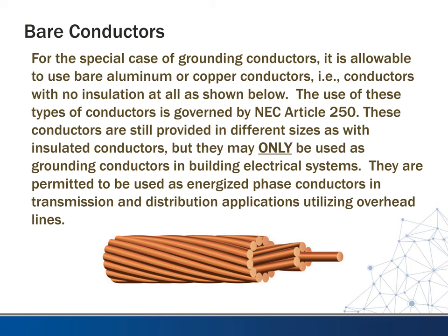The final category to touch on is bare conductors. For the special case of grounding conductors, it is allowable to use bare aluminum or bare copper conductors — that is, conductors with no insulation at all. The use of these conductors is governed by NEC Article 250, which covers grounding. These conductors are available in different sizes, as with insulated conductors, but may only be used as grounding conductors or in grounding systems such as lightning protection. They are permitted as energized phase conductors in transmission and distribution applications when run overhead on power poles, but we should never use them for that in any electrical building application.